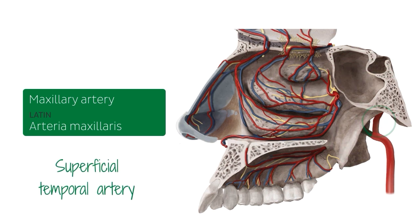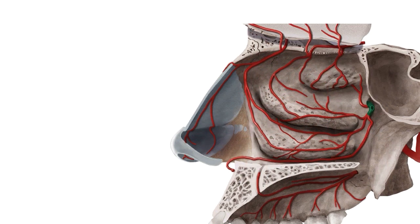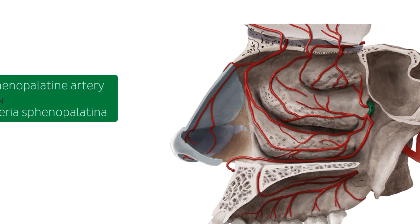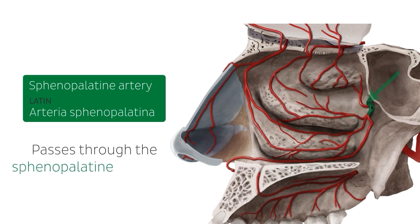We will now have a look at some of the branches of the maxillary artery which supply the nasal cavity. The first branch we will look at is the sphenopalatine artery. The sphenopalatine artery passes through the sphenopalatine foramen, which is a hole within the skull, located at the posterior aspect of the superior meatus.